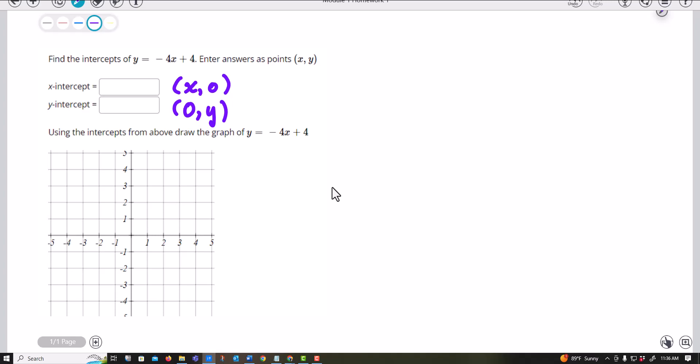So if I have y equals negative 4x plus 4 and I want to find this x-intercept, I set y equal to 0 and I solve this equation for x. I could do that by adding 4x, just doing the algebra here on both sides.